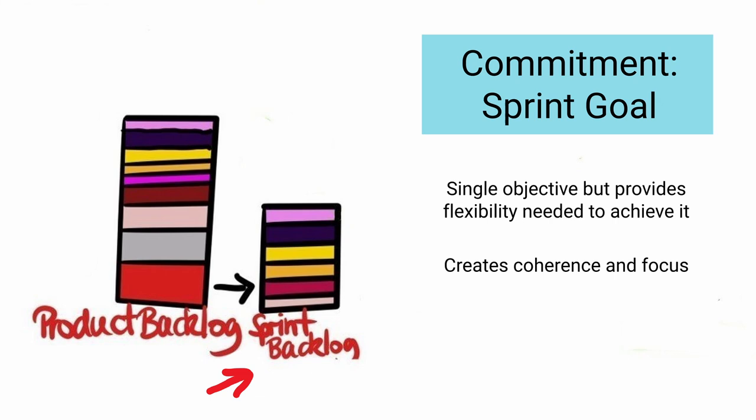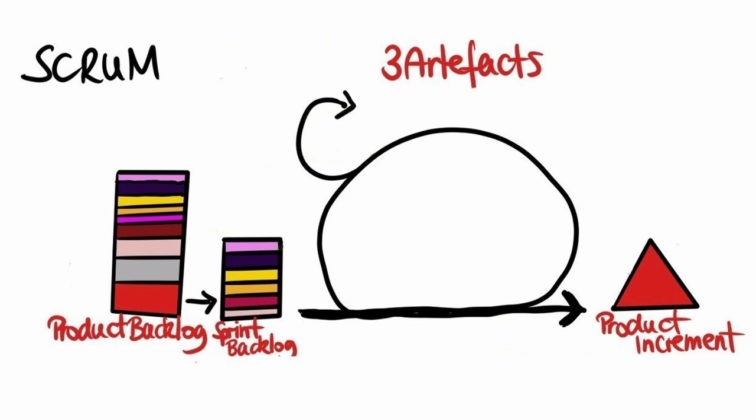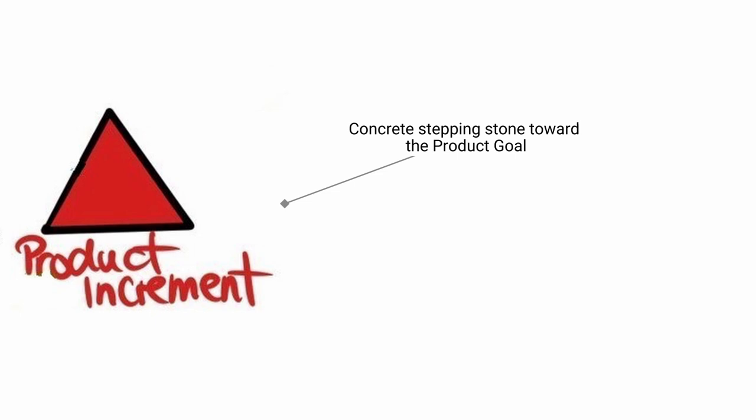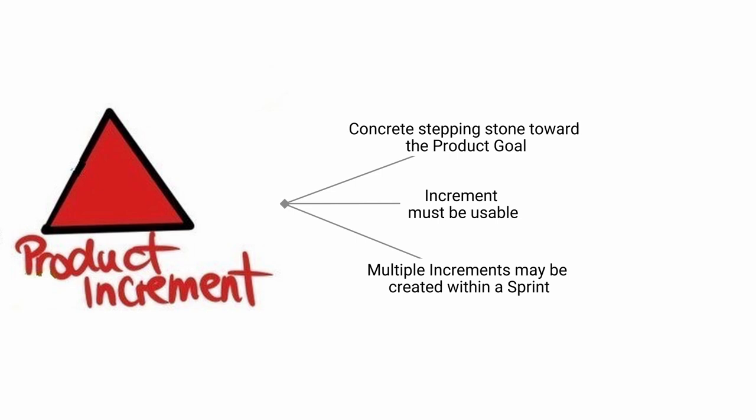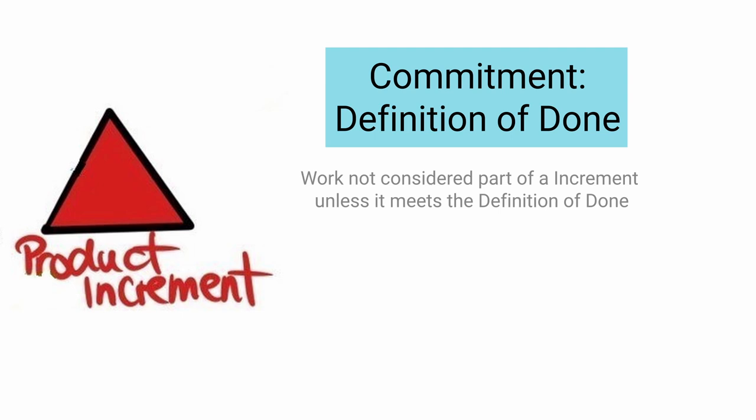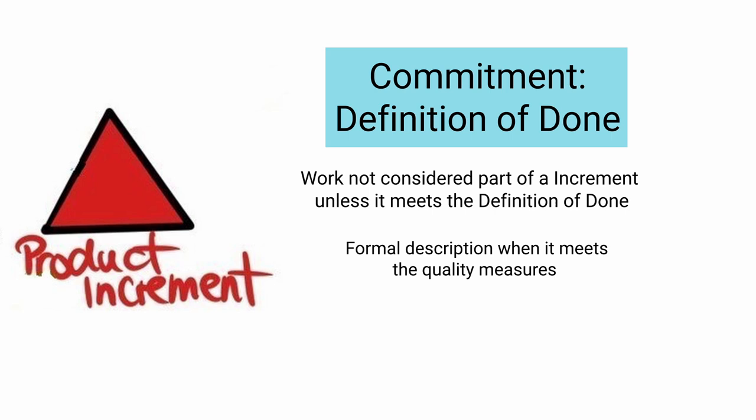Increment. An increment is a concrete stepping stone towards the product goal. In order to provide value, the increment must be usable. Multiple increments may be created within a sprint. Commitment: Definition of done. Work cannot be considered part of an increment unless it meets the definition of done. The definition of done is a formal description of the state of the increment when it meets the quality measures required for the product. It creates transparency by providing everyone a shared understanding of what work was completed as part of the increment.